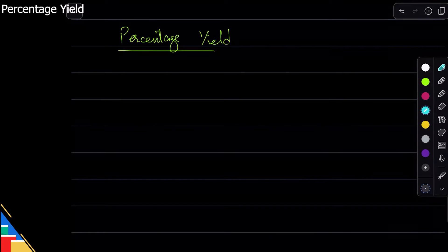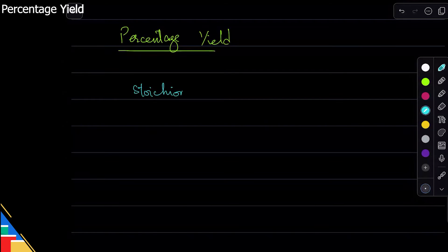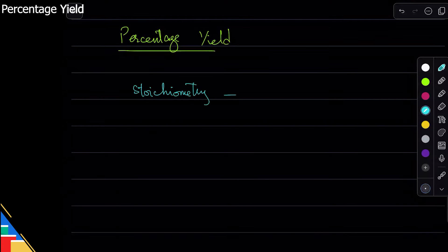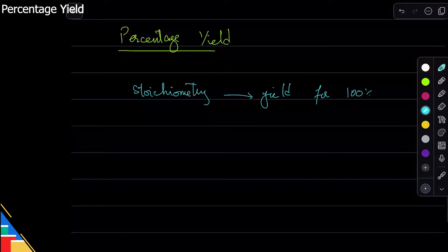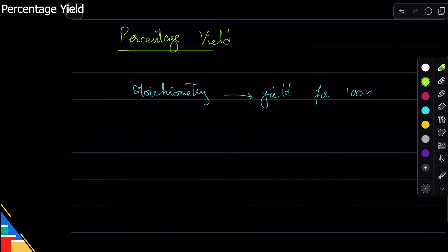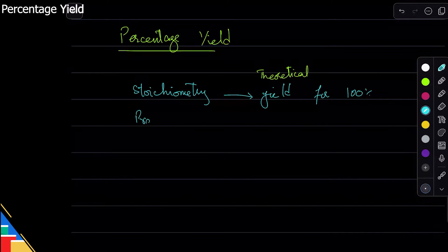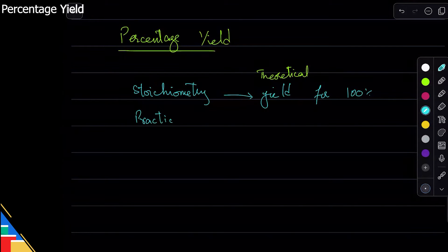So what we do is we do the calculations. Stoichiometry gives us the yield for 100 percent. The calculations tell you what will happen if everything happened correctly. This is called theoretical yield, and this is always for 100 percent. But in reality that doesn't happen, so when you do practical work, then the yield that you get is called experimental yield, which is always less than 100 percent.